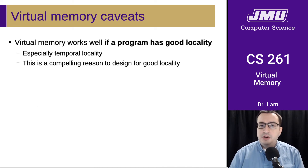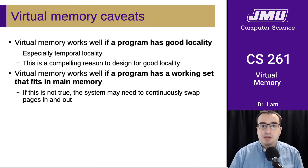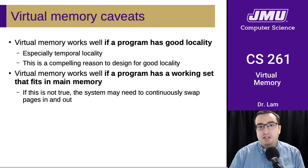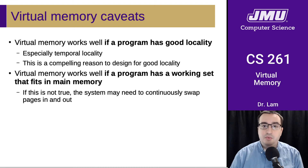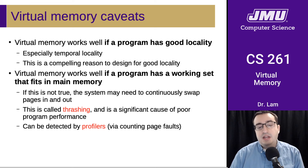Virtual memory works well if a program has good locality, especially temporal locality, so this is a compelling reason to design for that. It also works well if a program has a working set that fits in main memory — all the data needed for a particular calculation is small enough to fit inside main memory. If this is not true, the system will need to continuously swap pages in and out of disk, which is extremely expensive and is called thrashing. This is a significant cause of poor program performance at large scales, and can be detected using instruments called profilers.